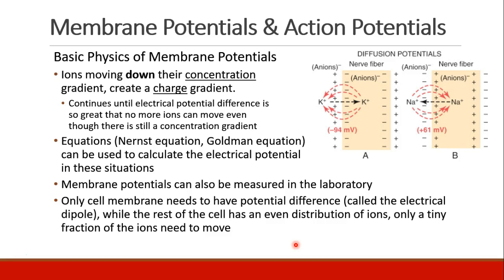Now that we've talked about membranes and concentration gradients, we can understand the basic physics of membrane potentials. When ions move down their concentration gradient, they can create a charge gradient. This continues until the electrical potential difference is so great that no more ions can move, even though there's still a concentration gradient. For example, potassium ions — in very high concentration inside the cell and very low concentration outside — move out of the cell, building up positive charges outside and negative charges inside, until the charge gradient finally stops this process.